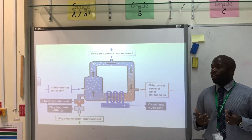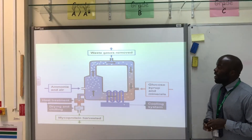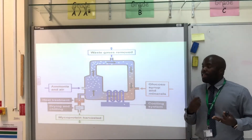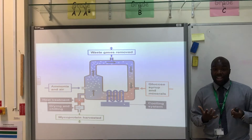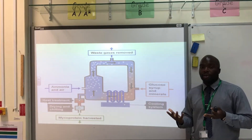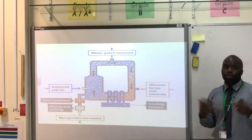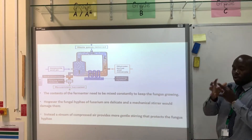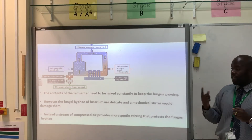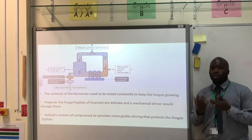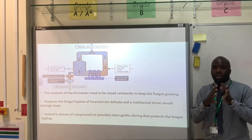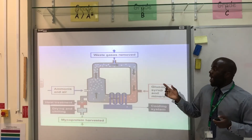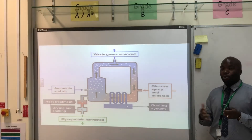Now we need to look at how micro protein is actually made, and in particular how we harvest this Fusarium fungus. We put the Fusarium into a fermenter. For this process, in order for them to grow rapidly, they need aerobic conditions and therefore oxygen is needed. The fermenter contents need to be continuously mixed. However, we can't use a normal stirrer because the branch-like structures — known as the hyphae — are very delicate, and a stirrer would damage them. Therefore, we pump air into the fermenter, and that air mixes the Fusarium by itself.